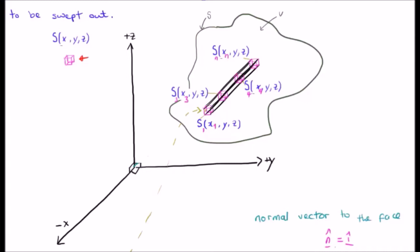We have S1, S2, excuse me, S3, S4, S N. Notice, of course, we are keeping Y and Z fixed and varying X.